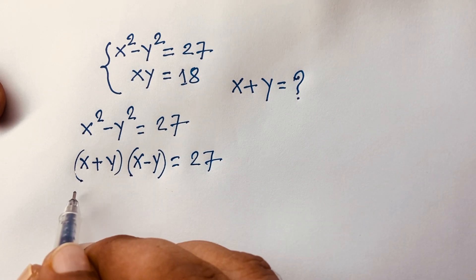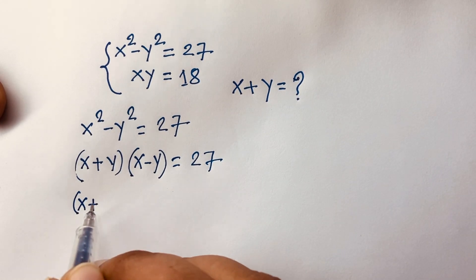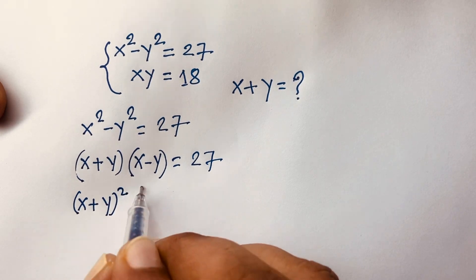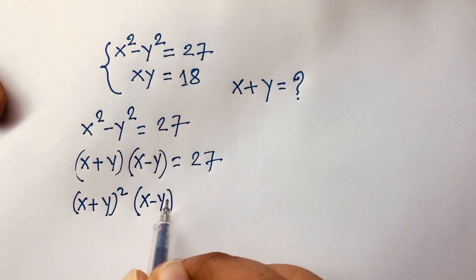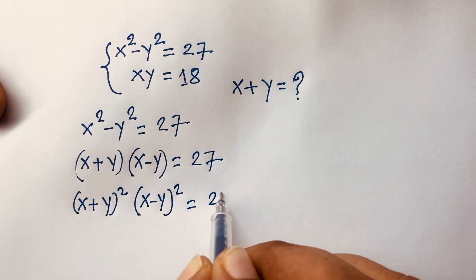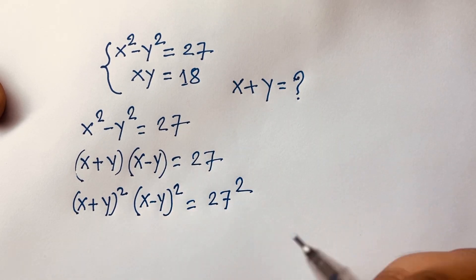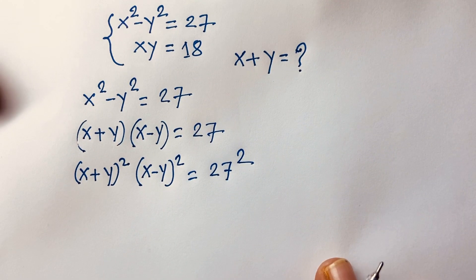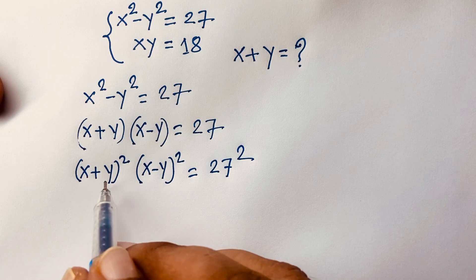Then I use both sides whole square. So I can say it will be x plus y whole square times x minus y whole square is equal to 27 squared.